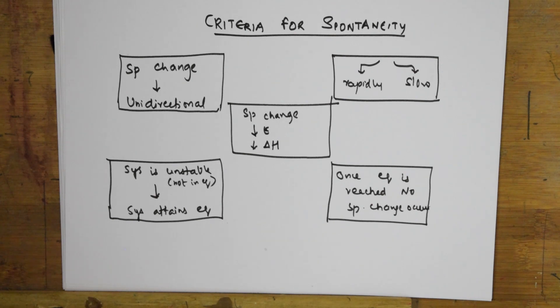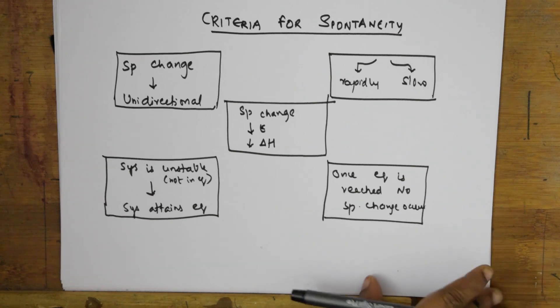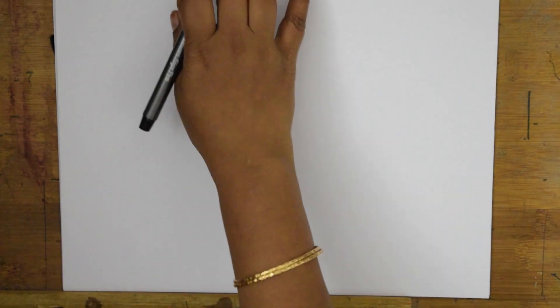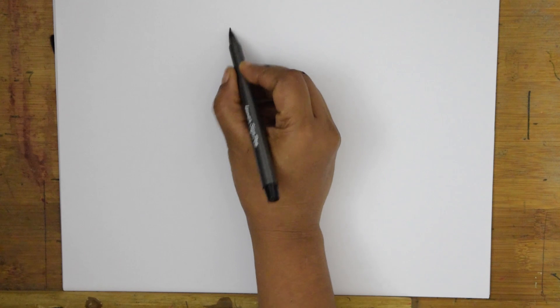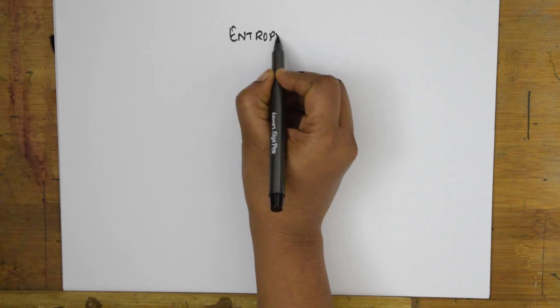So for today I have given you examples of spontaneous processes and the criteria for spontaneity. Now we will move to a concept related to spontaneity — that is entropy. You should first know what spontaneity is, and then come to this topic. So now I'll speak about entropy.